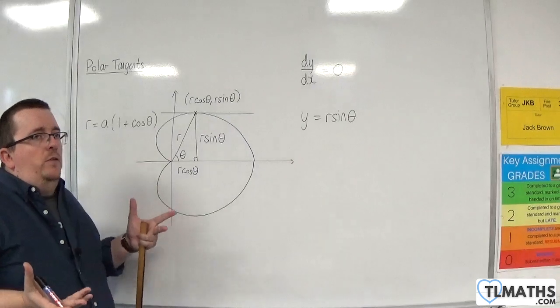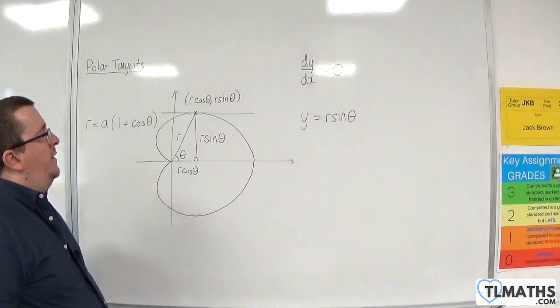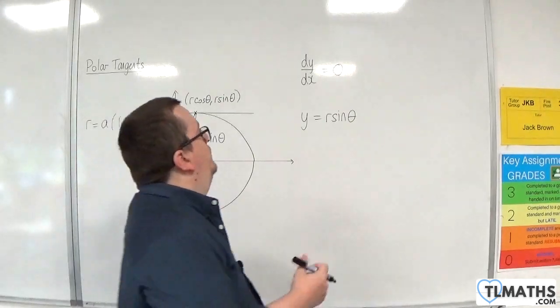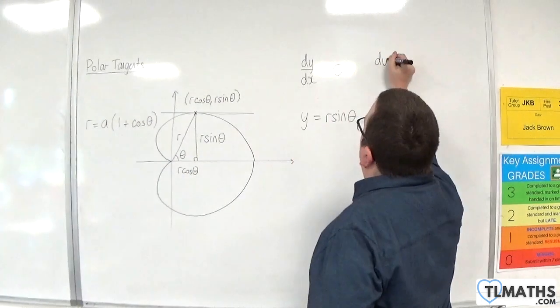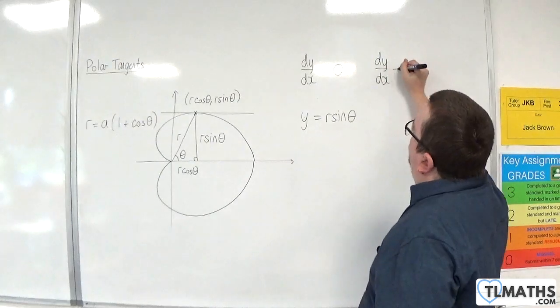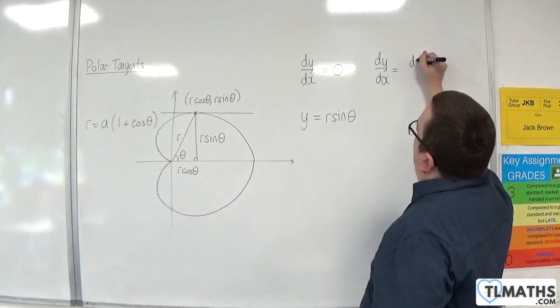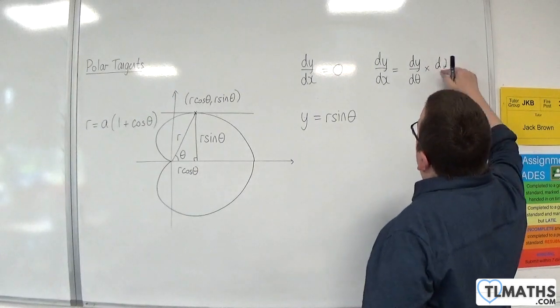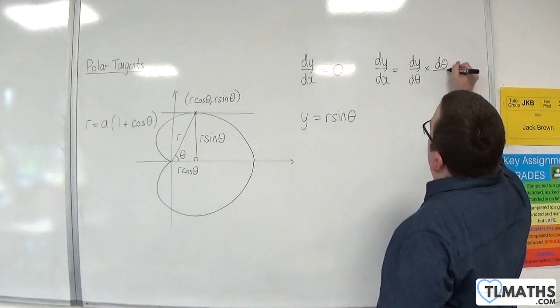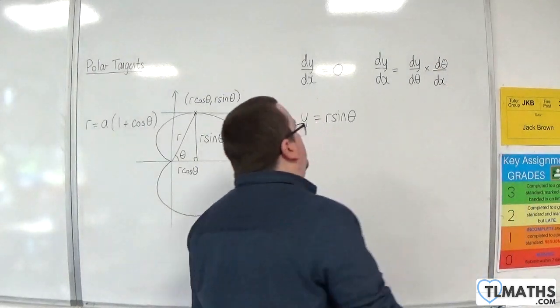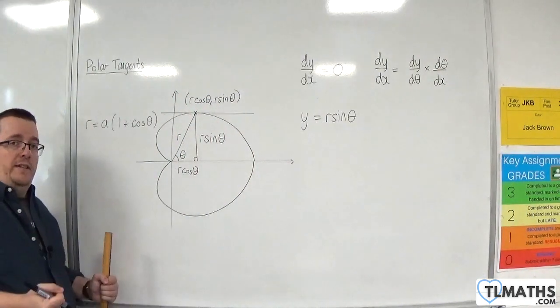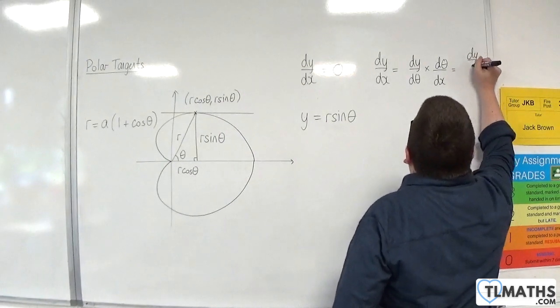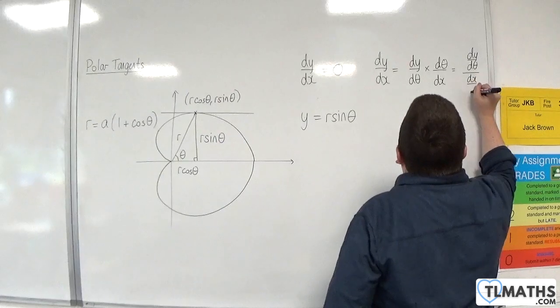But still, how are we getting dy by dx here? Well, in order to do that, we're going to be using the chain rule. So the chain rule would say that dy by dx is equal to dy by d theta times d theta by dx. And you can alternatively write that as dy by d theta over dx by d theta.